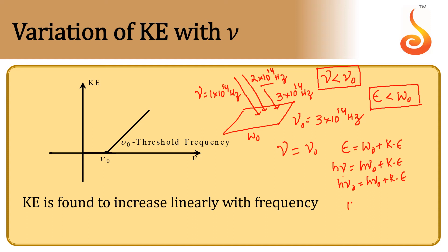Therefore, the kinetic energy of the electrons when the incident frequency is exactly equivalent to the threshold frequency of the metal will be 0. That means whatever energy we give is completely utilized to remove the electron, and therefore there is no extra energy left to be gained as kinetic energy. So the kinetic energy will be 0.